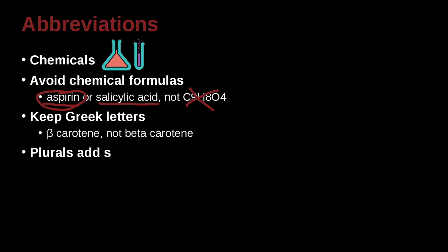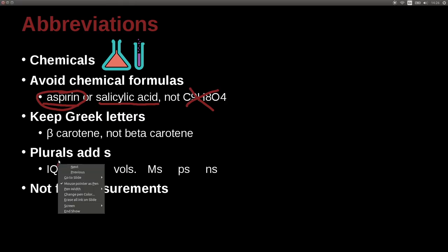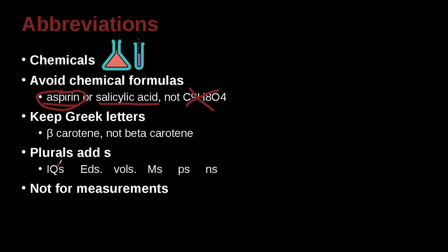For plurals, you need to add an S. So for example, if you have the abbreviation IQ, and you want to make it plural, you say IQs. Please pay attention there, no space before, right? There's no space there. There's no apostrophe there. It just says IQs, VDs. Volumes, vols.